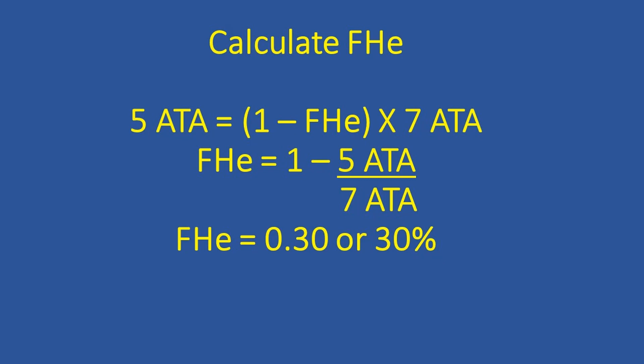So if we do a little bit of mathematical manipulation, we have the fraction of helium is going to be equal to 1 minus 5 ATAs divided by 7 ATAs. So this tells us if we need an END of 130 feet and we're actually going to dive to 200 feet, what we need to have is approximately 30 percent of helium in our mix.